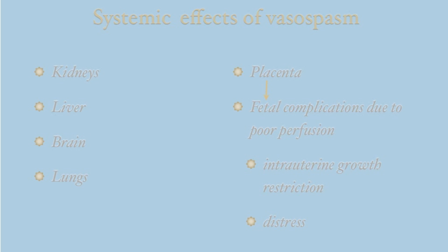Pregnancy-induced hypertension has a variety of systemic effects on the maternal kidney, liver, brain, and lungs due to vasospasm and vasoconstriction. Maternal vasoconstriction causes reduced flow and perfusion to the placenta, resulting in fetal complications such as intrauterine growth retardation — abbreviated IUGR — and fetal distress with or without labor.